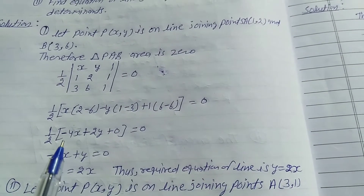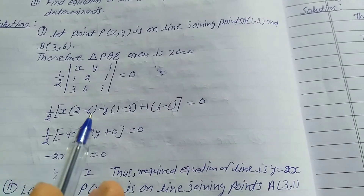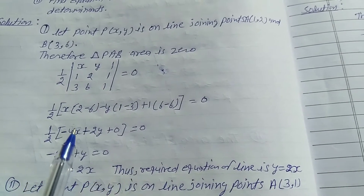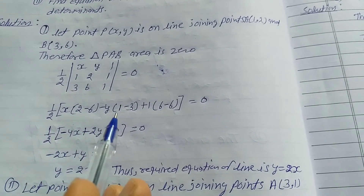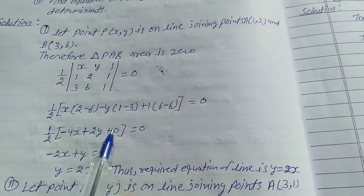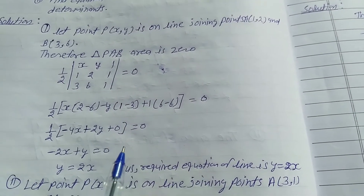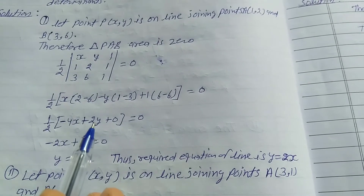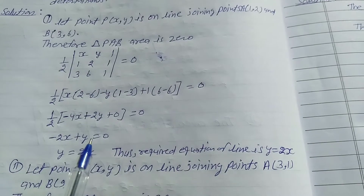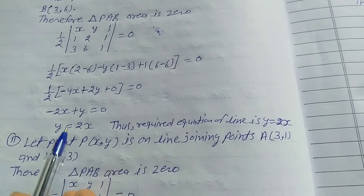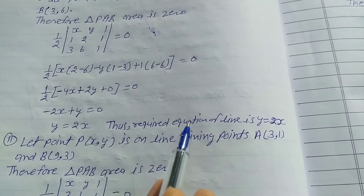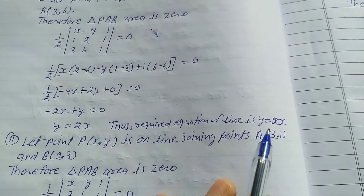Multiplying inside: 1/2 times (−4x + 2y) = 0, so −4x + 2y = 0, which simplifies to −2x + y = 0, so y = 2x. Thus the required equation of the line is y = 2x.